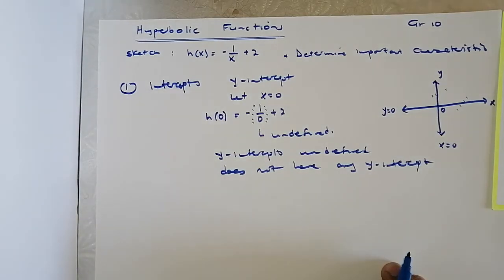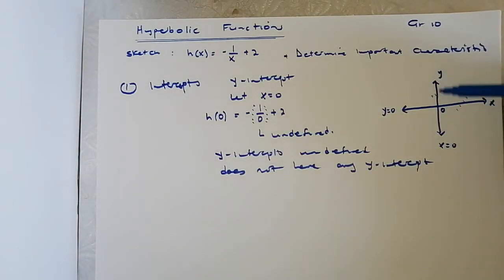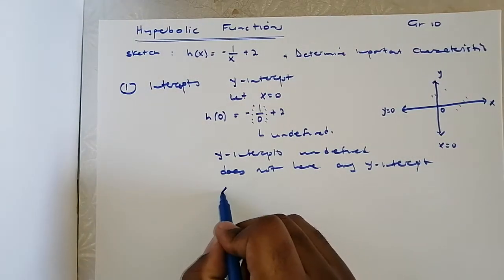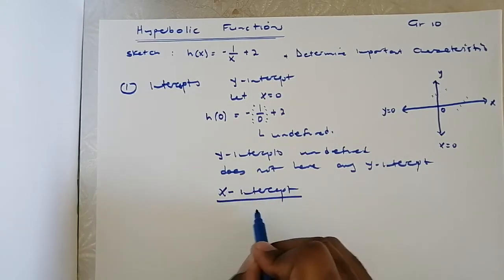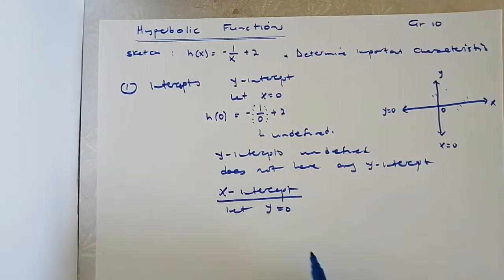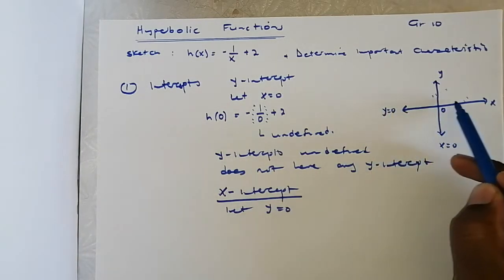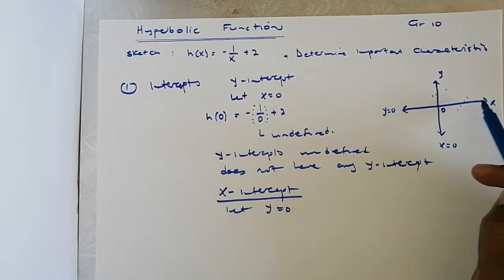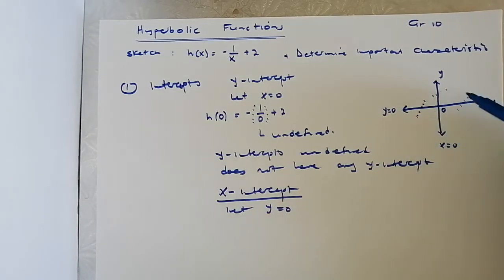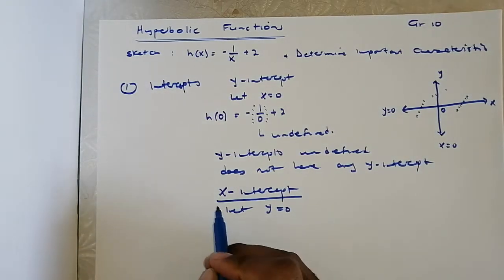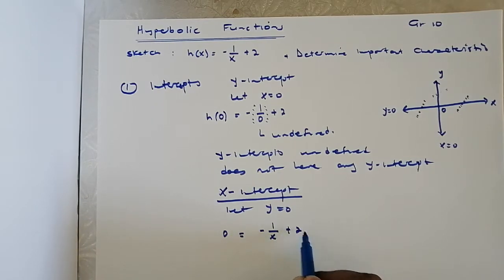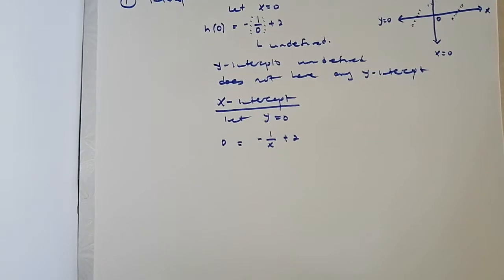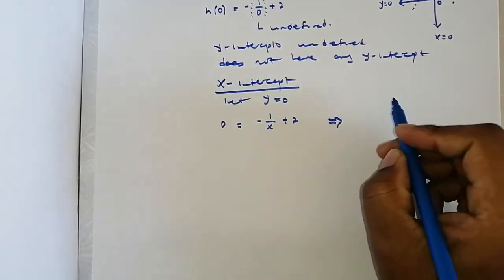That means the function will never cross the y-axis. Secondly, we're going to determine the x-intercept. At the x-intercept we let y equal to zero — this is where the graph will actually cut the x-axis. So we determine the value of x when y equals zero: 0 equals negative one divided by x plus two.